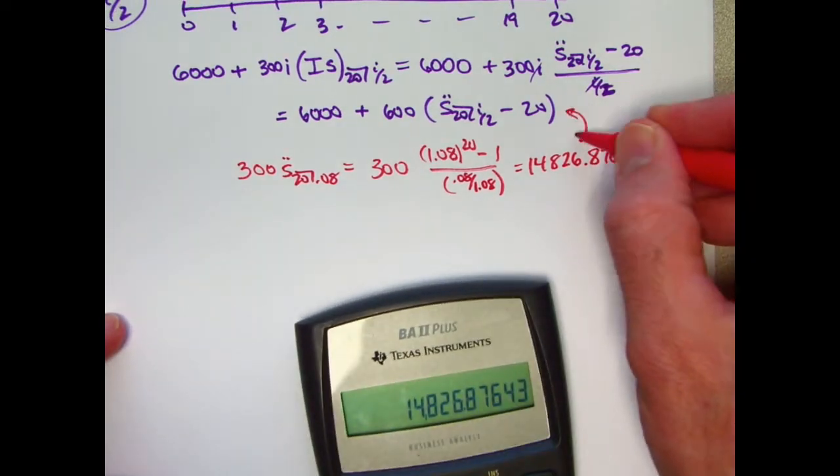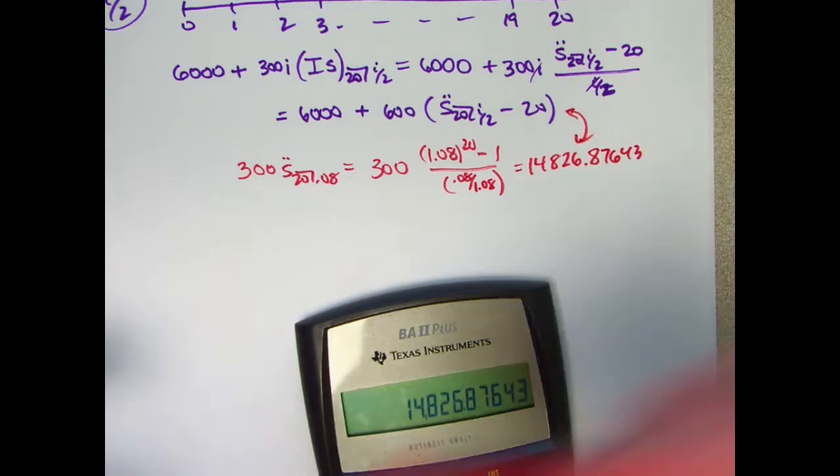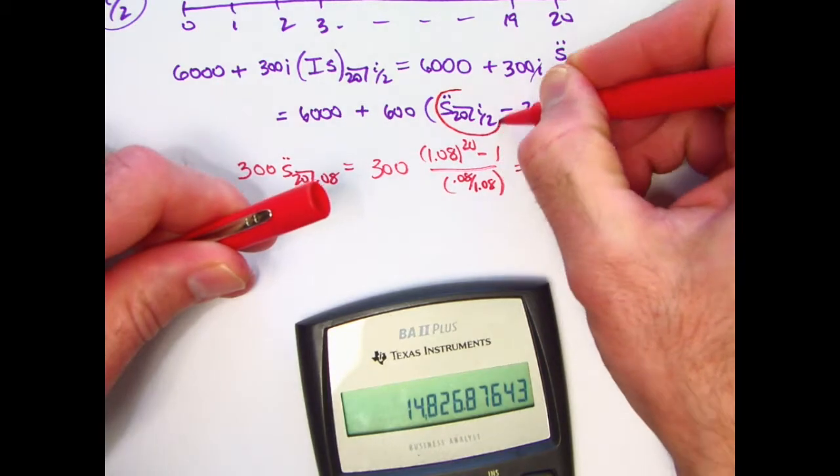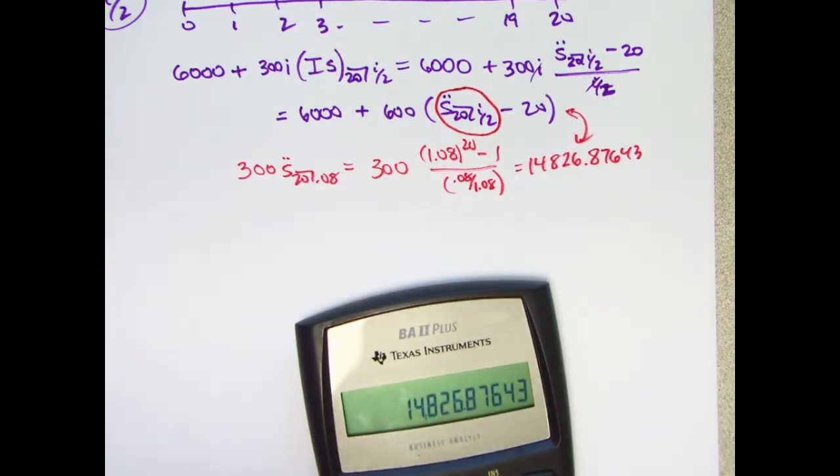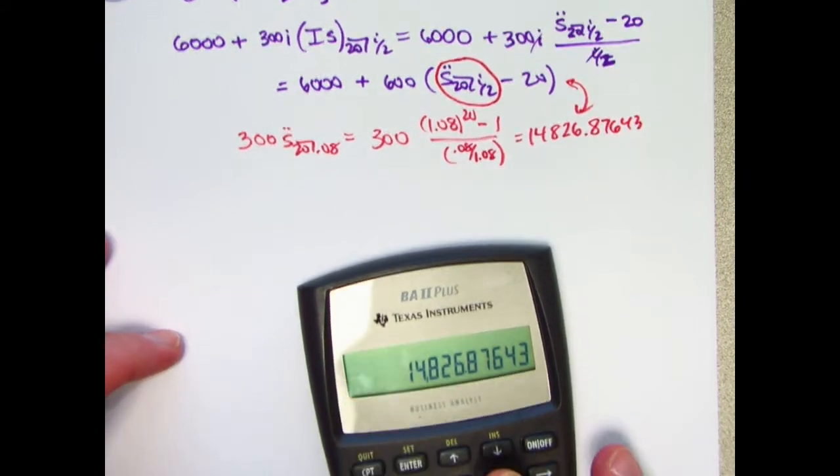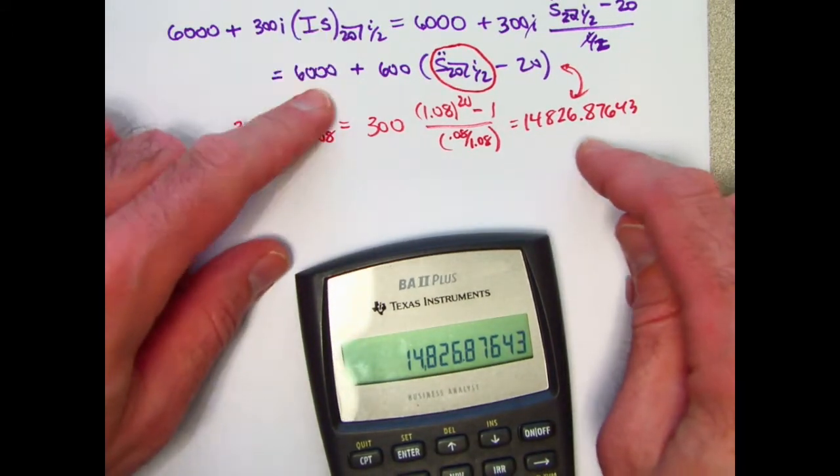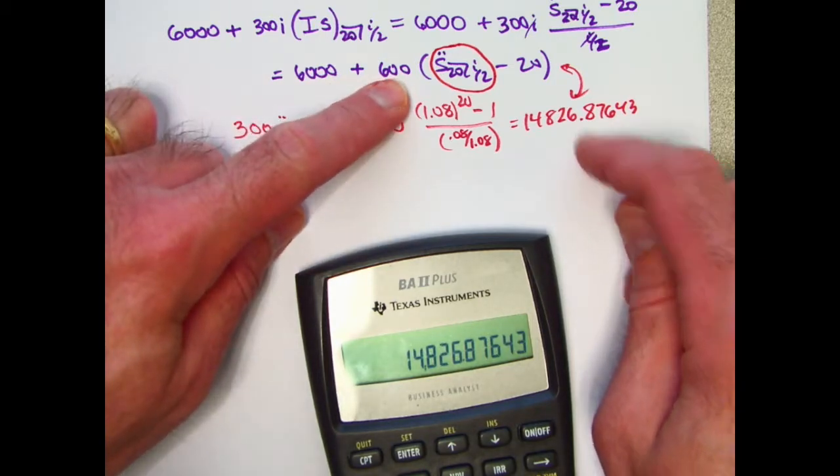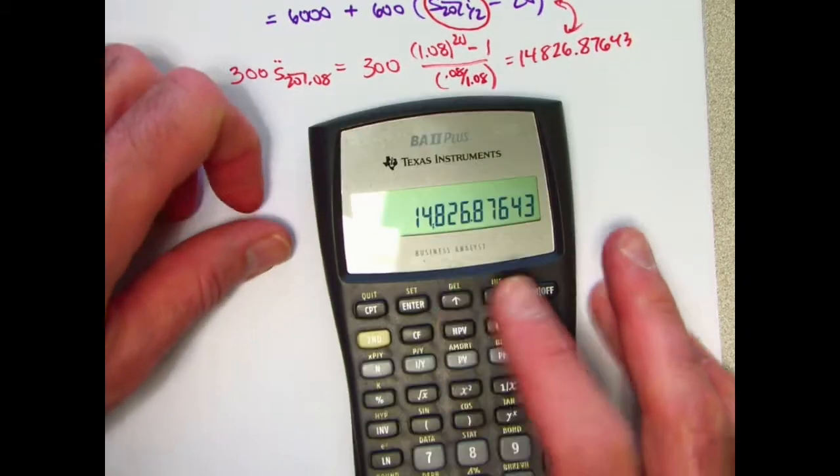These two things have to be equal. And we can take this equation and solve for this future value of an annuity due based on interest rate i over 2. Let me go ahead and do that. I won't bother storing anything more in the calculator. I will subtract 6,000 from both sides, then divide both sides by 600, then add 20 to both sides.